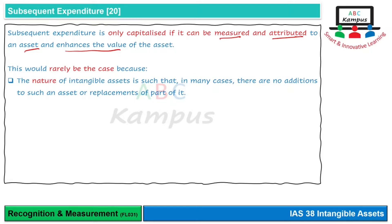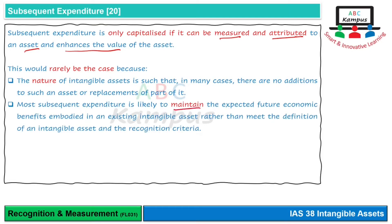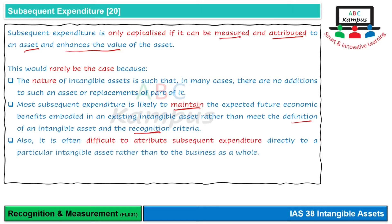If a license or permission covers an indefinite period, the same principle applies. Sometimes an addition can be made — for example, adding an inventory module to an existing ERP software — and that can be capitalized. However, most subsequent expenditure on software, such as debugging and corrections, is simply maintenance that maintains rather than enhances future economic benefits, and so is expensed.